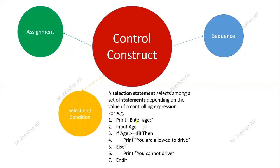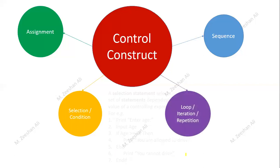If the user enters an age of nine years, in statement three the computer checks whether the value of age is greater than or equal to 18. Since nine is not, statement four is not executed, but statement six — 'print you cannot drive' — will be executed and appear on screen. We will discuss this further in the next slide, so no need to worry if you have any confusion.